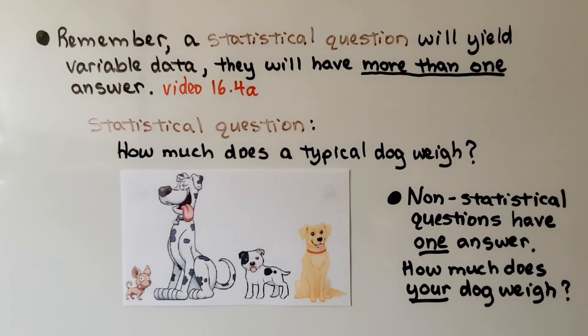Remember, a statistical question will yield variable data. They will have more than one answer. We talked about that in 16.4a. A statistical question example would be, how much does a typical dog weigh? Non-statistical questions have one answer like, how much does your dog weigh?